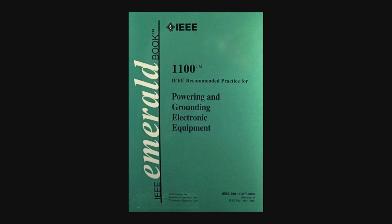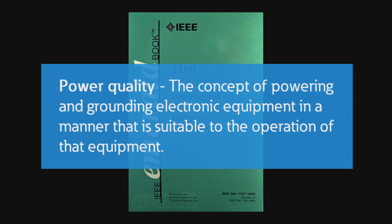Power quality is defined by the IEEE as the concept of powering and grounding electronic equipment in a manner that's suitable to the operation of that equipment. Basically, that means what works for you and your equipment. Every system and many loads are different and respond differently to PQ issues, but power quality issues can be simplified by dividing them into four main categories.